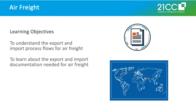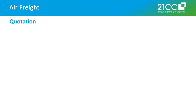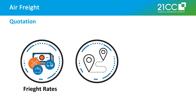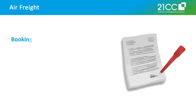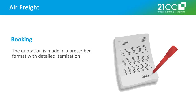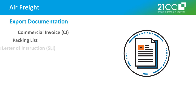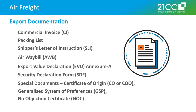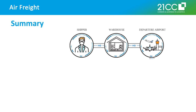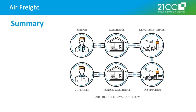A packing list lists the seller, buyer, shipper, invoice number, date of shipment, mode of transport, carrier, and itemizes quantity, description, the type of package such as a box, crate, drum or carton, the quantity of packages, total net and gross weight in kilograms, and package marks and dimensions if appropriate.